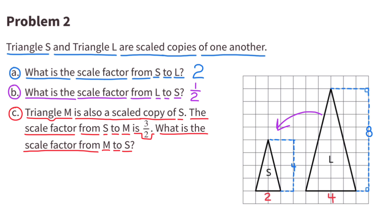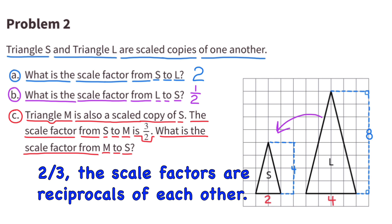C. Triangle M is also a scaled copy of S. The scale factor from S to M is 3 halves. What is the scale factor from M to S? The scale factor from M to S is 2 thirds. The scale factors are reciprocals of each other. For example, 3 halves times 2 thirds equals 1. That means 2 thirds is the reciprocal of 3 halves. When you multiply a number by its reciprocal, the product is always 1.